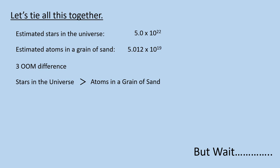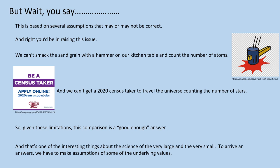But wait, you might say. We've used a number of assumptions to arrive at this answer. There might be more or less galaxies. There might be more or less stars per galaxy. And our sand grain might be smaller or larger. And of course, you're right. But we can't smack the sand grain with a hammer on our kitchen table and count the number of atoms. And we can't get a 2020 census taker to travel the universe counting the number of stars. So given these limitations, this comparison is a good enough answer to the question. And that's one of the interesting things about science of the very large and the very small. To arrive at answers, we have to make assumptions of some of the underlying values.